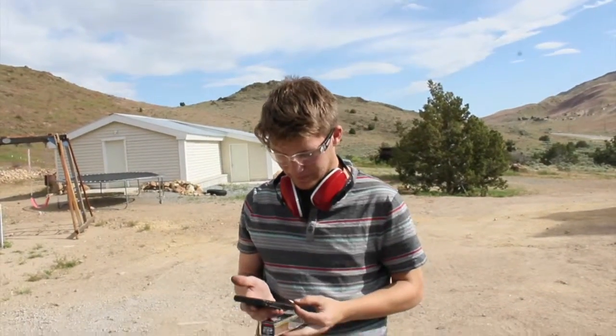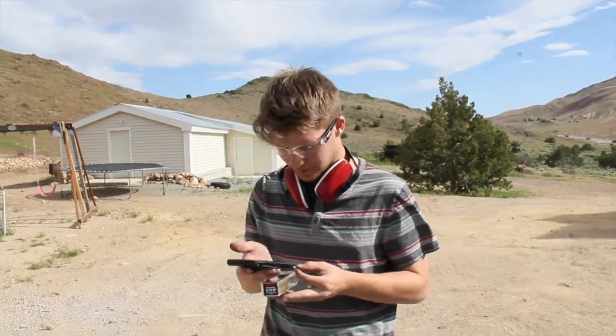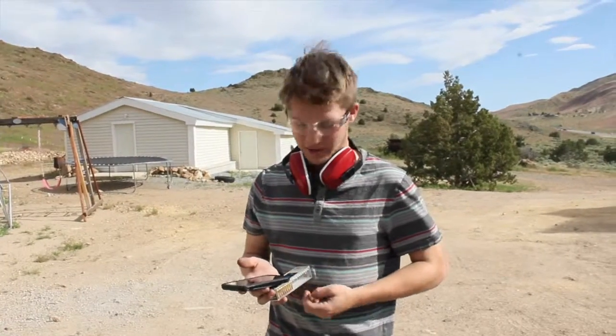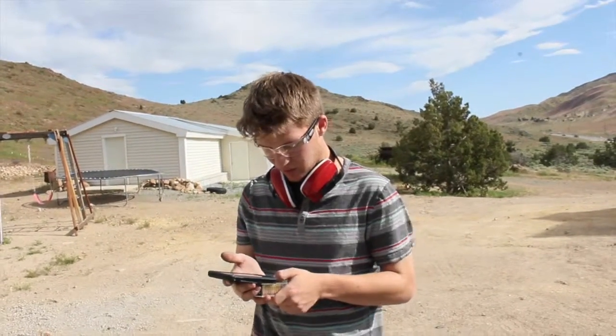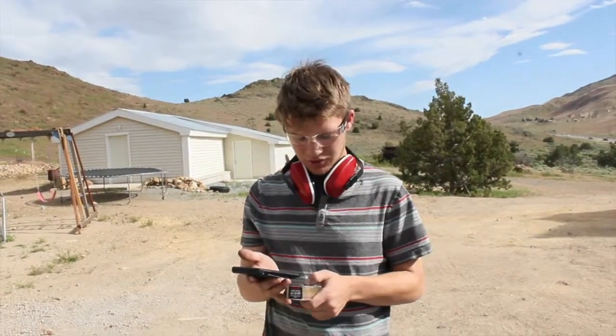Today we are going to be testing one of the most common rifles, also one of the smallest, a .22 long rifle. The bullet weighs 2.33 grams and on the box it predicts that it will go 1,260 feet per second.